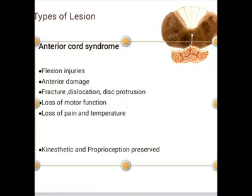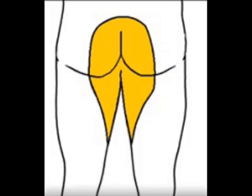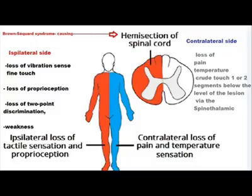Moving towards the types of lesions in spinal cord injuries, it can be Brown-Séquard syndrome, anterior cord syndrome, central cord syndrome, and posterior cord syndrome. Details about each lesion and the pattern of sensory anesthesia are given in the corresponding diagrams.